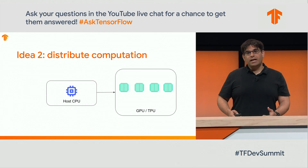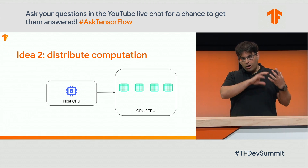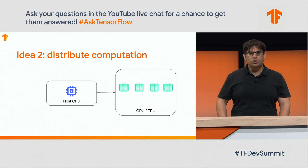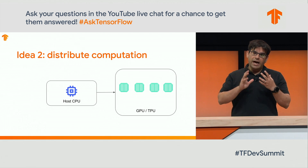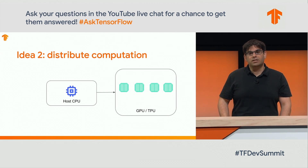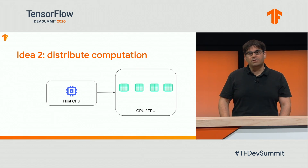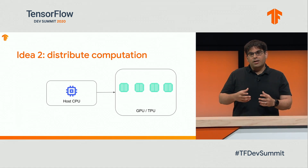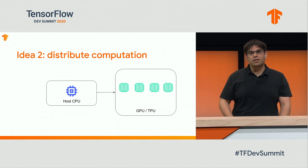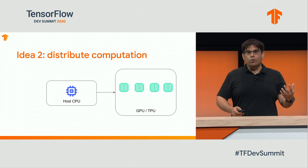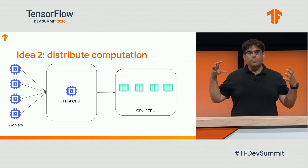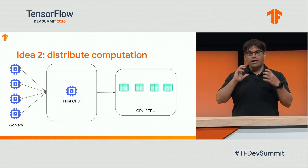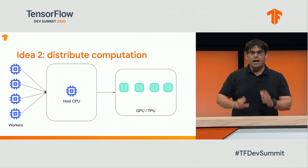The second idea addresses cases where not all computation is reusable — for example, if you have randomized crops in your preprocessing. If you snapshot that and read it back, you lose the randomization, so snapshot isn't applicable there. The second idea is to distribute the computation. Instead of one host CPU driving a bunch of accelerators, you can offload this computation to a cluster. You can then utilize the computational power of many different workers to feed the host, so you're no longer bottlenecked on input preprocessing.